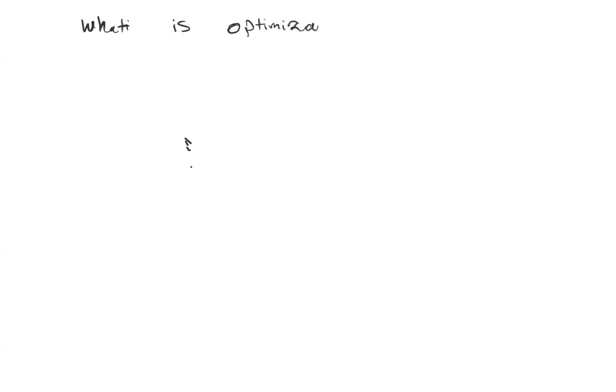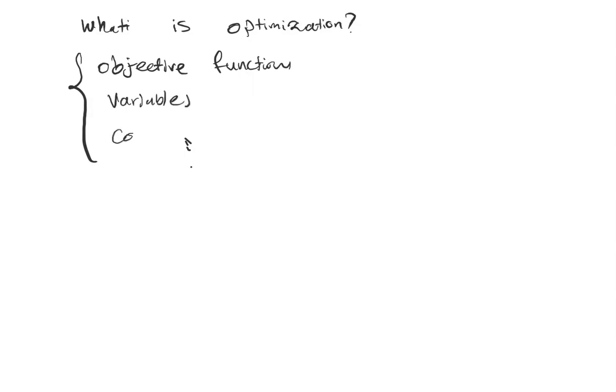So the overview of this video: it was about what is optimization. Optimization is to formulate and solve a problem to achieve the optimal possible outcome in a given situation. We talked about the building blocks — objective function, variables, and constraints — and how different people and different situations may lead to different formulations of an optimization problem, even for the same problem, as shown in the exam example.